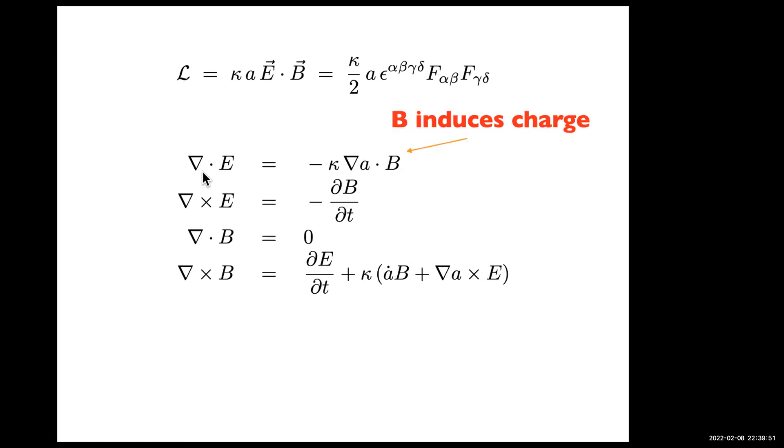Here's what you get: in the presence of an axion field with a spatial gradient, then an external magnetic field will induce effectively a charge on the right-hand side of this Maxwell equation. That's the definition of charge. So what you have is a magnetic field in the presence of an axion gradient induces charge. You also have that a time-dependent axion field, even if it's spatially homogeneous, induces an effective current in the presence of a magnetic field.